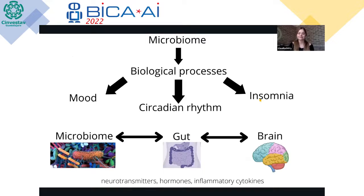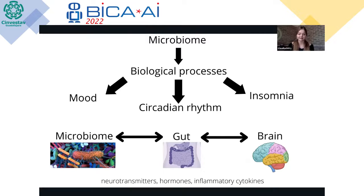The microbiome is the population of microorganisms that live on your body, and here we focus specifically on those in the gastrointestinal tract. The composition of this microbiome affects different biological processes in the gut. These can then travel along the microbiome gut-brain axis using neurotransmitters, hormones, or inflammatory cytokines, and these affect the biochemistry of your brain, in turn affecting mood, circadian rhythm, and insomnia.